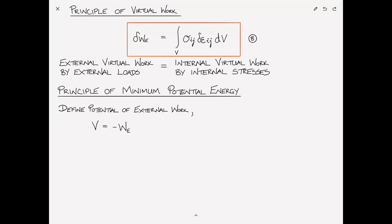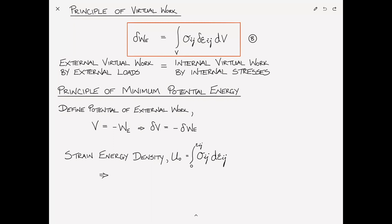Rather than viewing the work of the external loads as external work, we view it in terms of the potential energy of the system. So V equals the negative of the external work, and δV equals the negative virtual external work. We also define the strain energy density per unit volume, U₀, as the integral from 0 to εᵢⱼ of σᵢⱼ dεᵢⱼ. From this we can infer that ∂U₀/∂εᵢⱼ = σᵢⱼ — the derivative of the strain energy density with respect to the strains yields the stress.